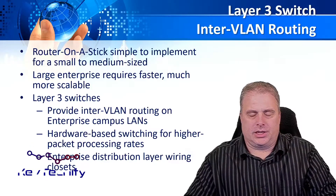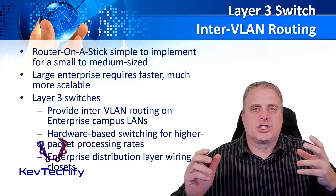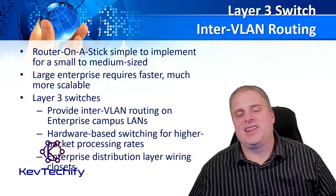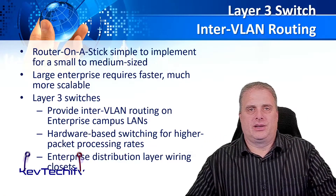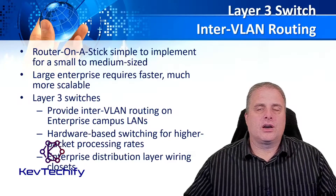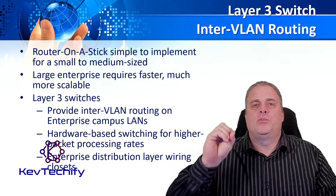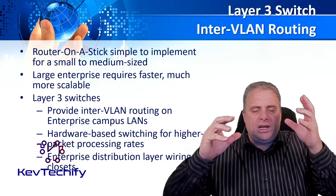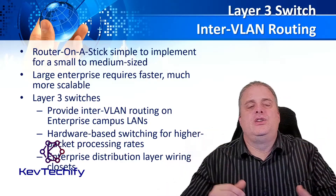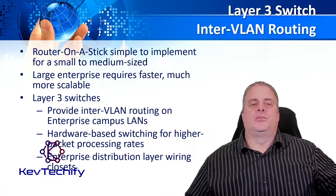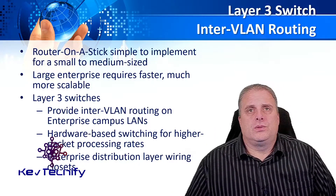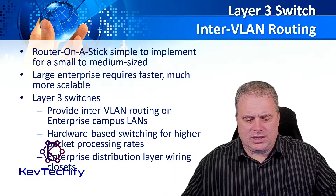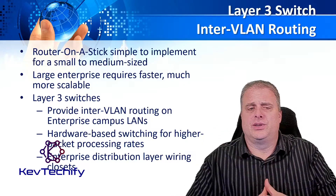Router on a stick is great to implement in a small to medium-sized business — a couple hundred employees up to a couple thousand, maybe 10,000 at the most. But in a bigger environment — larger enterprises needing faster and more scalable solutions, looking at tens of thousands or even hundreds of thousands of users — layer 3 switches provide the faster and more scalable option. Layer 3 switches provide inter-VLAN routing in campus networks, which are companies that have multiple locations.